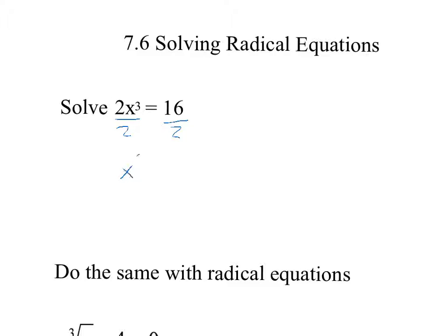Now we have x cubed equals 8. To get rid of the cubed, we have to cube root it. We could write it like that, or write it to the 1/3 power — either way means the same thing. The cubed root and the cubed cancel, so we get x equals the cubed root of 8, which is 2. So that would be our answer.